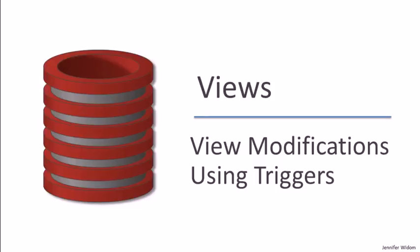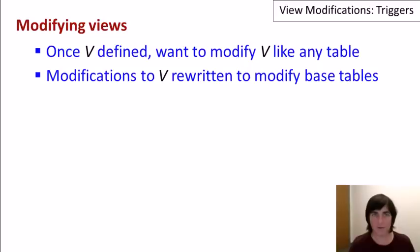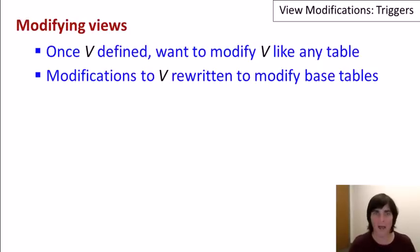In this video, which will mostly be live demo, we'll talk about modifying views through triggers. As a reminder, once we've defined a view, say called V, we'd like to be able to run modification commands over V as if it were a regular table. Since V is not a regular table — it's just a view definition — what happens is that the modification commands against V are rewritten to modify the base tables over which V is defined.